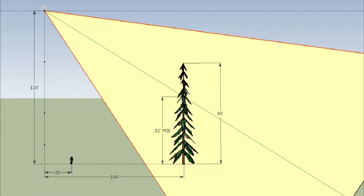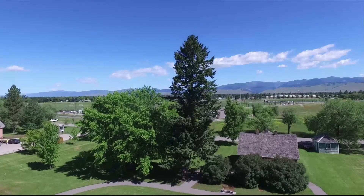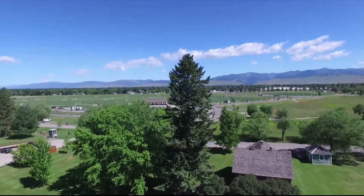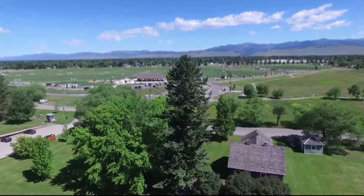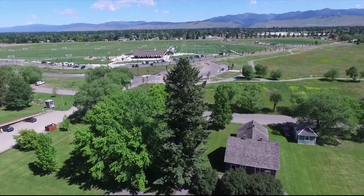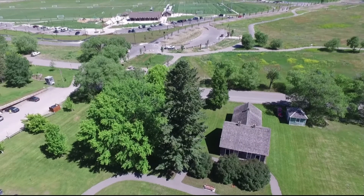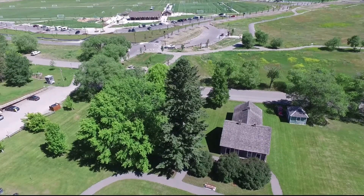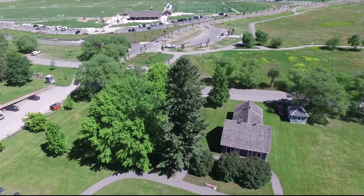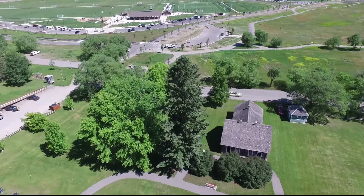If we want the sky eliminated, we set the POI at 52 feet and increase the aircraft altitude to 120 feet. The gimbal angle goes to minus 33 degrees and we see no sky in the image. Our POI at 52 feet is in the middle of the frame, the tree is entirely in the frame, and the sky is totally excluded.